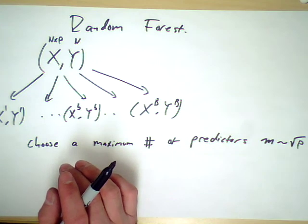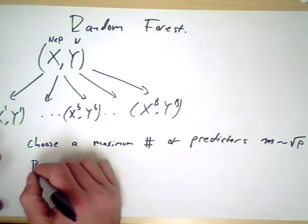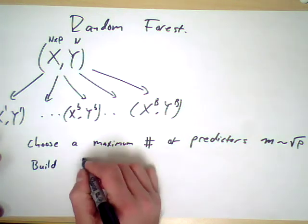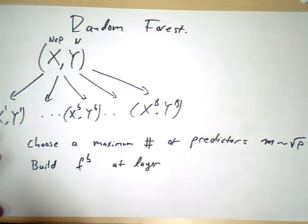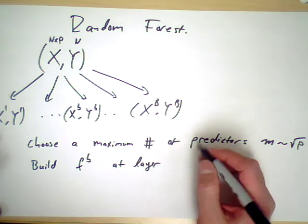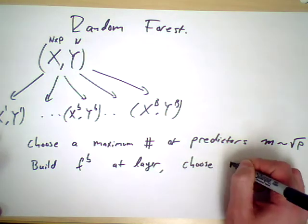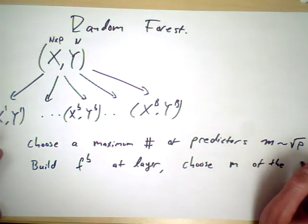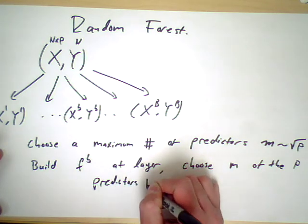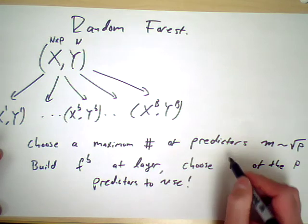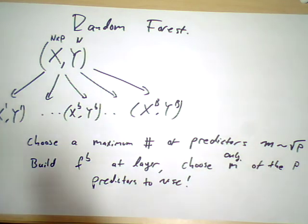The idea here is that when you build, say, model f B, at some layer—remember we're making trees here—at some layer, choose m of the p predictors to use. So instead of building a tree that checks all p predictors, let's choose a random subset m of those p, and then of those we'll build a model.